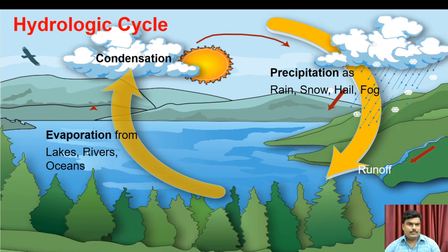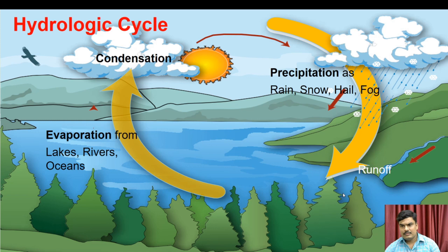The hydrologic cycle involves evaporation from lakes and rivers, then condensation of clouds, followed by precipitation as rain, snow, hail, and fog. These cycles are continuously repeated.